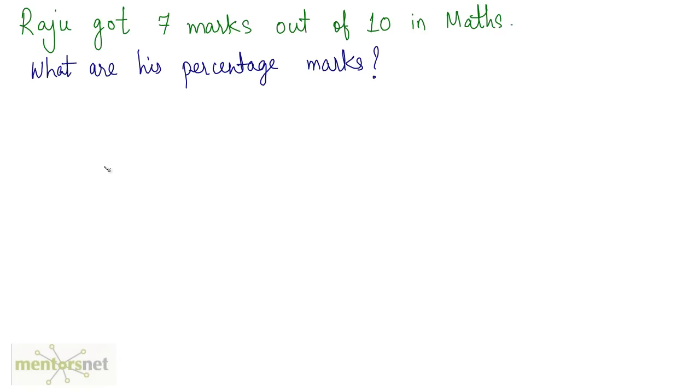In this question, Raju got 7 marks out of 10 in maths. What are his percentage marks? He got 7 out of 10, so I can write this as 7 upon 10.